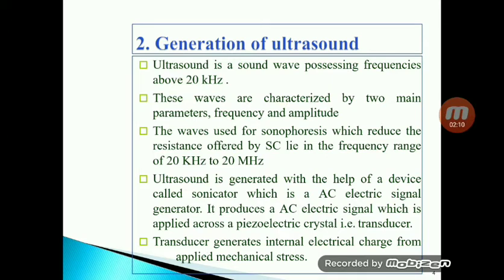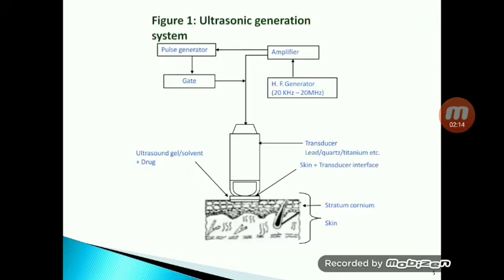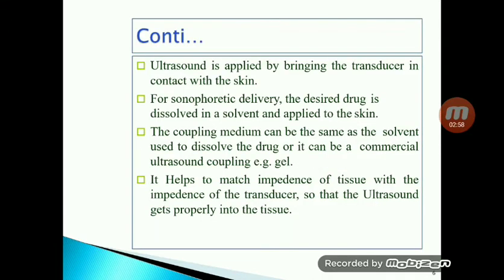The stratum corneum is the main obstacle for skin penetration. In the ultrasonic generation system, a high-frequency generator passes 20 kHz to 20 MHz frequency through a transducer made of lead zirconate or titanium. The ultrasonic waves then pass through the drug molecule dissolved in a solvent or ultrasound gel, and through the skin layers, disrupting them and increasing drug penetration.